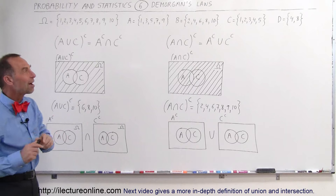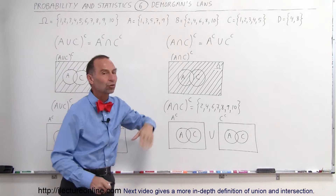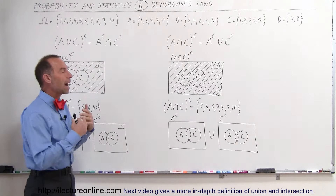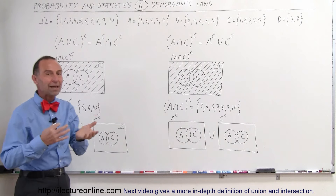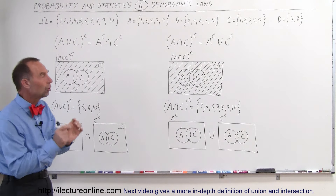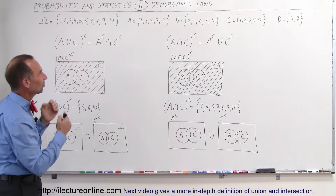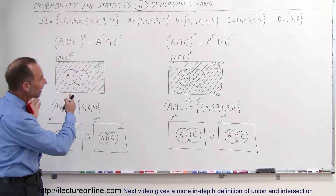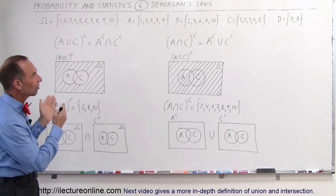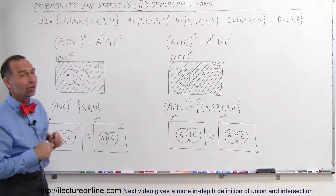Then we have four events: A, B, C, and D. Those are called events. The outcomes of A, B, C, and D are a portion of the sample space. So you can see A is a subset of the sample space, B is a subset, C is a subset, and D is a subset.